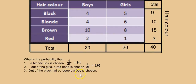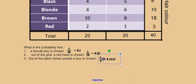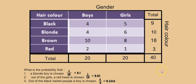The final example: out of the black-haired people, what is the probability that a boy is chosen? Here we're only looking at the row for black-haired people — all nine of them. It's like calling just the black-haired people aside and asking how many are boys: four. So the answer is 4 out of 9, not 4 out of 40. If the question had asked for the probability of choosing a black-haired boy overall, then it would be 4 out of 40.